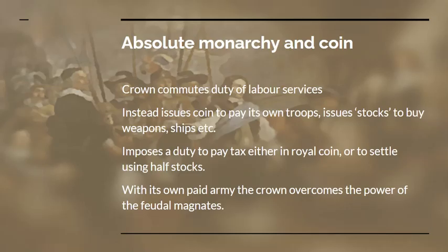Absolute monarchies established themselves against feudal power once an economy based on coin was in existence. The crown commuted labor services and imposed a duty to pay tax in royal coin. It issued coin to pay its own troops, and in Britain they issued stocks or tally sticks to buy weapons and ships. It then imposed a duty to pay tax in the royal coin, which could also be settled with half stocks. With its own paid army, the crown's power became supreme and was able to overcome the power of the feudal magnates.